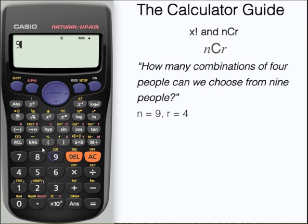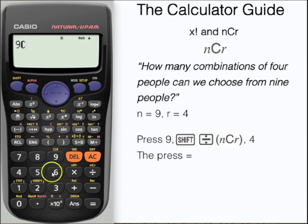Let's use that again now. This time, how many combinations of 4 people can we choose from 9 people? Input 9, then NCR, and press 4, and then equals. And here we have our answer, 126.